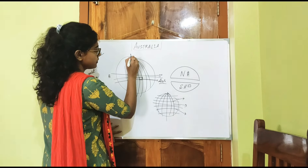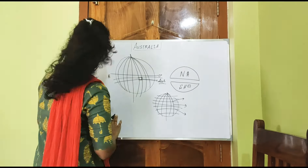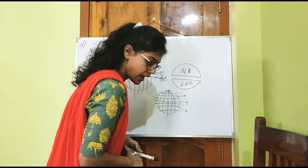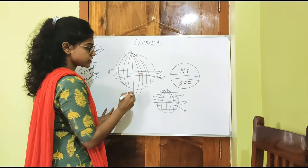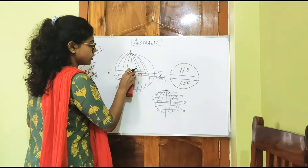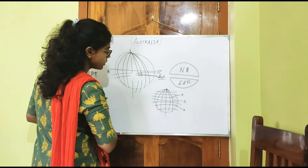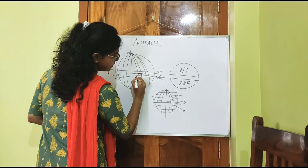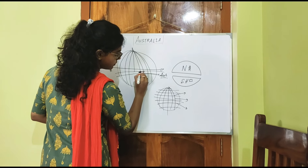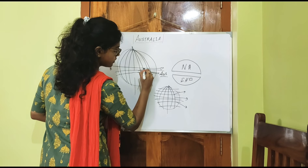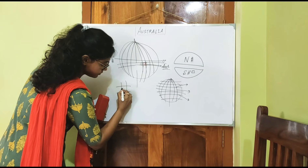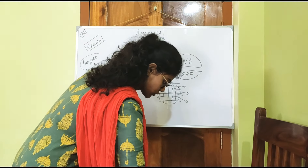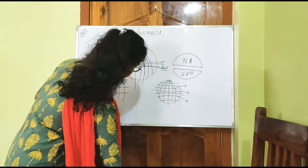These are the longitudes, and the middle one is the prime meridian. Now you can understand properly — this is the location. If I draw all these things, we will get only this line and this line. This is the border line. This is one latitude and this is another latitude. From this latitude to this latitude, here it is locating. And from this longitude to this longitude, here it is locating. This place is the Australian.